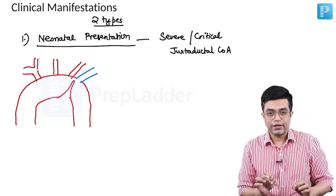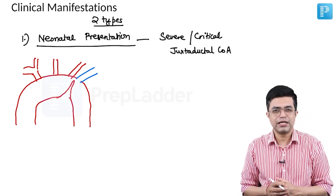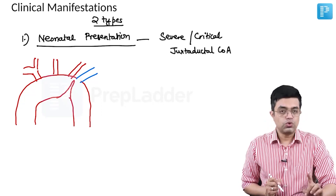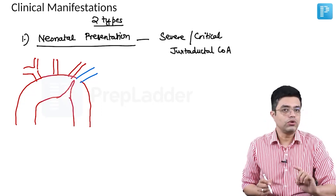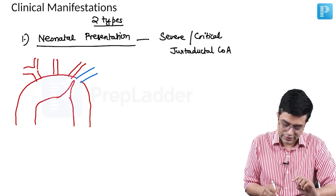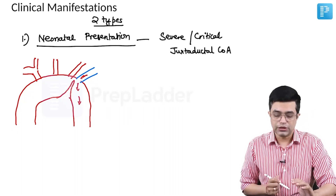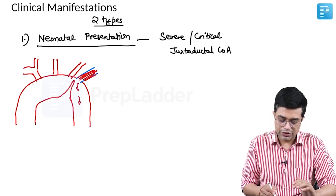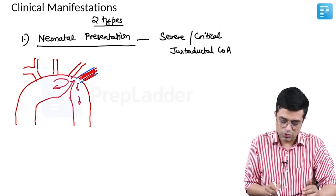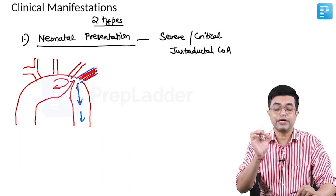If the narrowing is distal to the insertion of the ductus arteriosus, many cases will not be compatible with life and often get aborted in utero. In utero, blood supply to the descending aorta is maintained through the ductus arteriosus. After birth, as soon as the ductus arteriosus closes, the amount of blood reaching the descending aorta is significantly reduced.